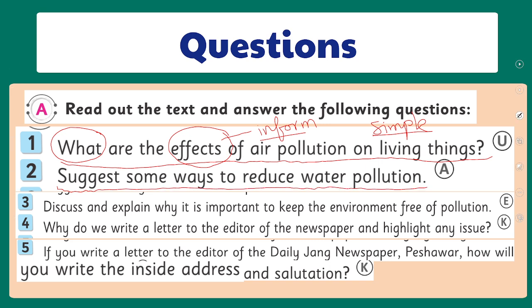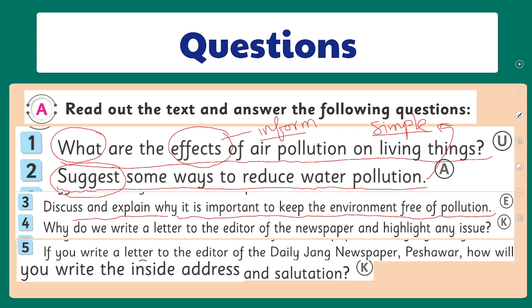Second question: 'Suggest some ways to reduce water pollution.' This is also asking for simple suggestions — it doesn't require analyzing the text at a deeper level, so it is also a simple question. Third question: 'Discuss and explain why it is important to keep the environment free of pollution.' This is a higher order question because discussion and explanation require deep knowledge and a thorough understanding of the topic, checking your interpretation, analysis, and critical skills.